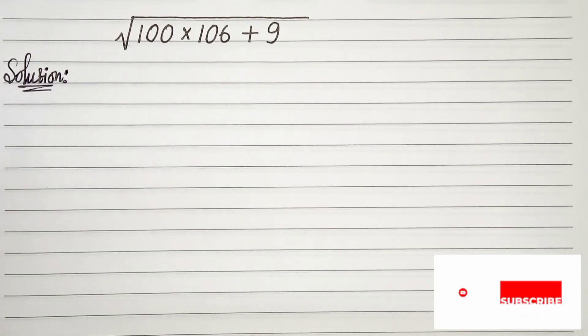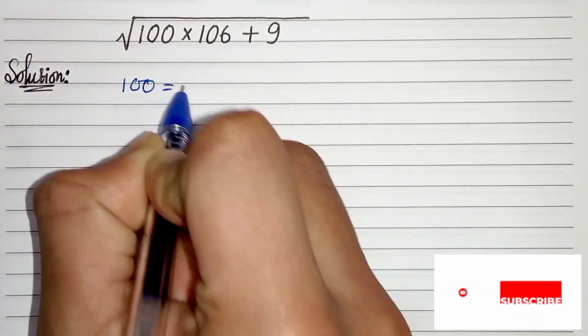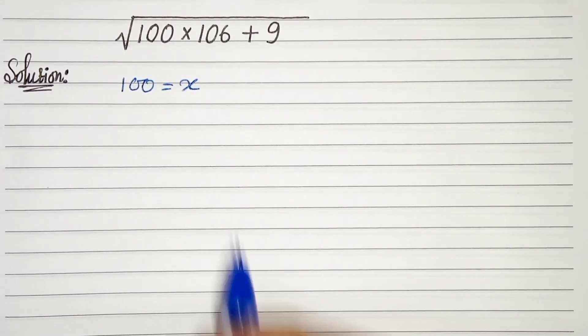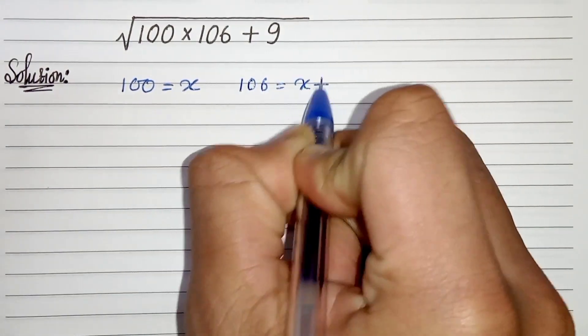First of all, let us write 100 as x. Then we can write 106 as x plus 6.